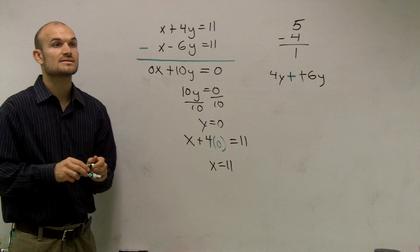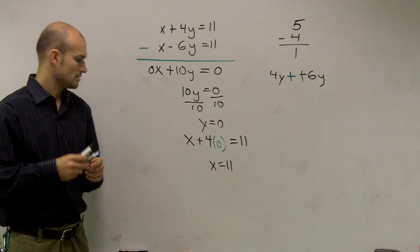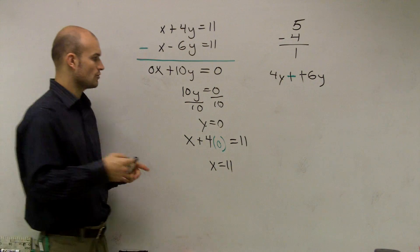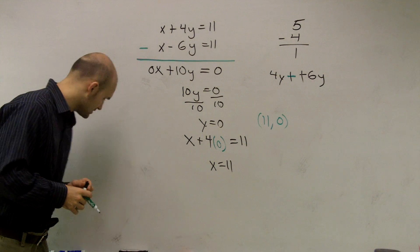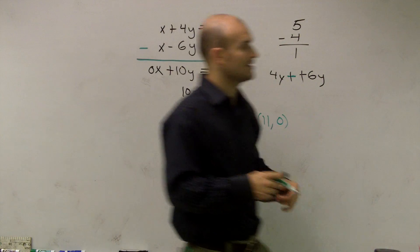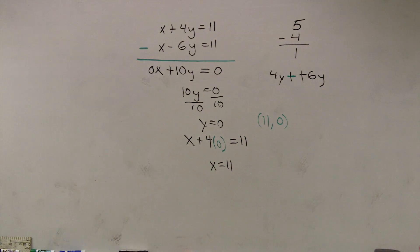So now I can write it as a coordinate point of 11, comma 0. It's your coordinate point where the two will intersect. And now I'm going to get my cap. Got it? Good? Maybe? Hopefully?